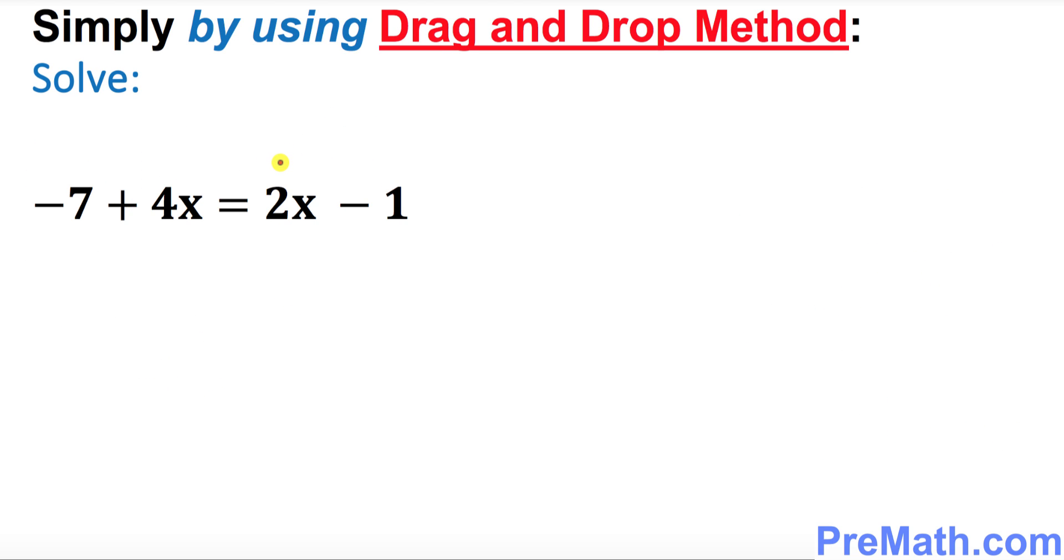Let's do this example. We're gonna solve this equation -7 + 4x = 2x - 1 by using this drag-and-drop method. I want to make sure that x's should be on the left-hand side. So when you drag this positive 2x and move it on the left-hand side, it becomes -2x. And I want to move this -7 on the other side.